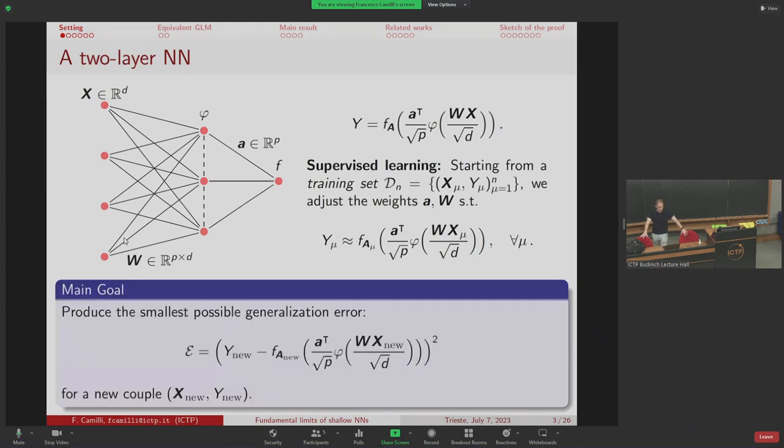The setting is supervised learning. We want to understand what happens when we train this two-layer neural network on a given data set of couples X_mu and Y_mu, by adjusting the weights A and W so that these relations are verified up to a certain tolerance.